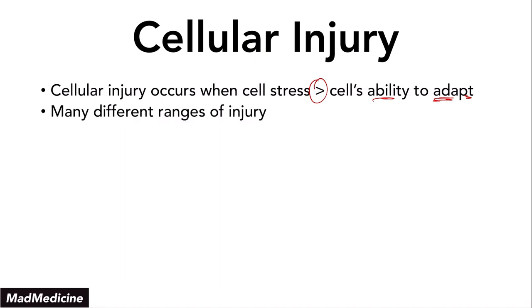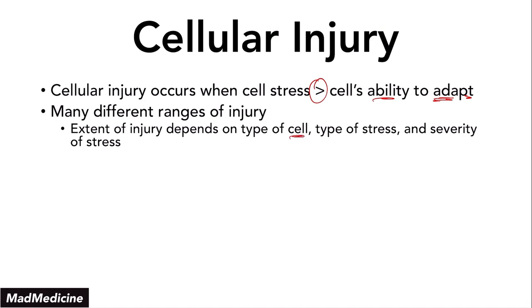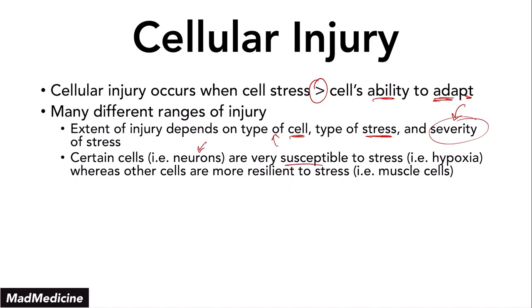You have many different ranges of injury that our cells are going to go through based on several factors. The extent of the injury is actually going to depend on the type of cell, the type of stress being placed upon them — whether it's chemical, whether it's physical — and most importantly, the severity of the stress being placed on the cell. Going back to the type of cell, you have to remember that it actually matters when it comes to cellular injury. There are certain cells in our bodies, like our neurons, which are very susceptible to stress like hypoxia. And there are other cells in our body, like our muscle cells, that are more resilient. A stroke is very deadly to our brain because you're cutting off the blood supply and the oxygen supply for our neurons.